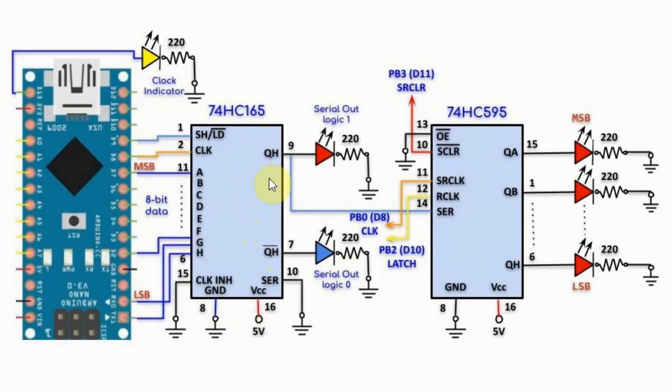The serial outputs of the 74165 are connected to indicating LEDs. The QH serial output is connected to a red LED to indicate a serial out of logic 1, and the QH bar output is connected to a blue LED to indicate a serial logic 0 output.